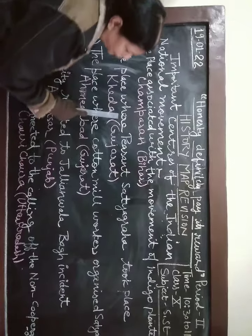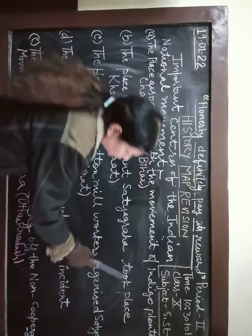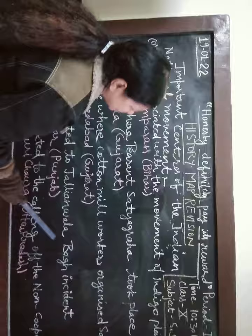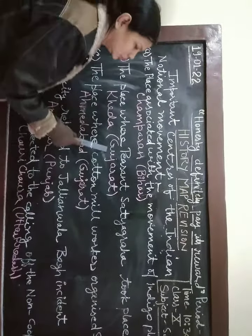The place where peasant Satyagraha took place, the farmer Satyagraha, took place at Kheda in Gujarat.